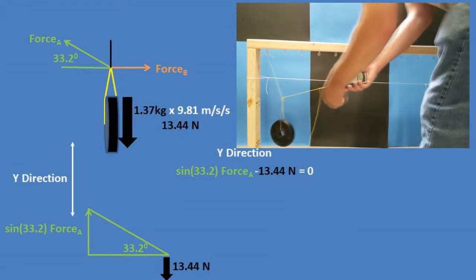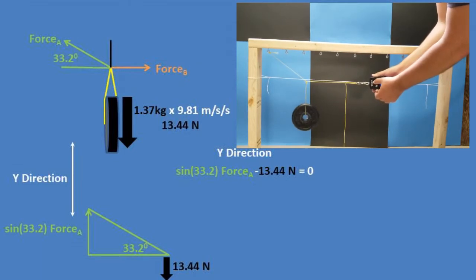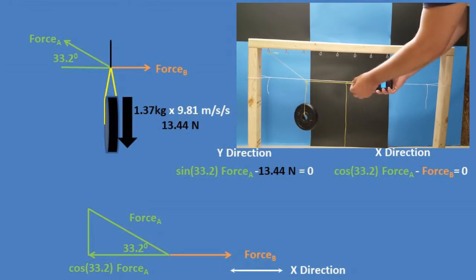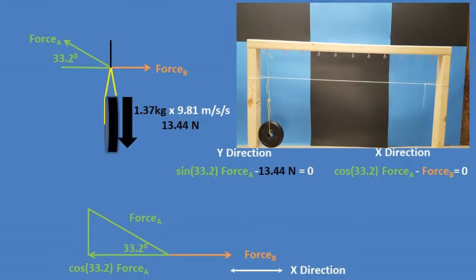So, the sine of 33.2 degrees times force A minus 13.44 newtons must equal zero. In the x direction, we have that the cosine of 33.2 degrees times tension force A minus tension force B must equal zero due to no movement.